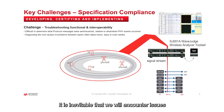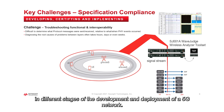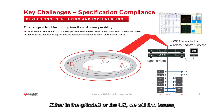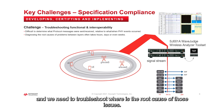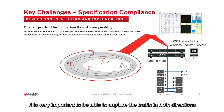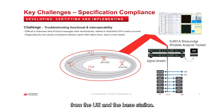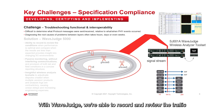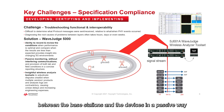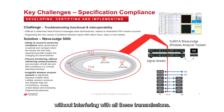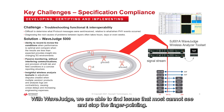It is inevitable that we will encounter issues in different stages of the development and deployment of a 5G network, either in a gNodeB or the UE. We will find issues and we need to troubleshoot the root cause of those issues. It is very important to be able to capture the traffic in both directions, from the UE and the base station. With WaveJazz we are able to record and review the traffic between the base stations and the devices in a passive way, without interfering with those transmissions. With WaveJazz we are able to find issues that most cannot see, and stop the finger pointing.